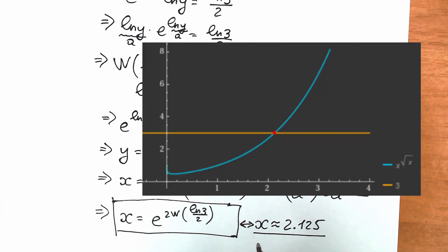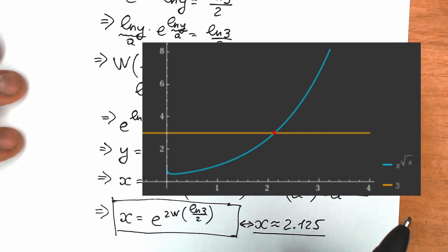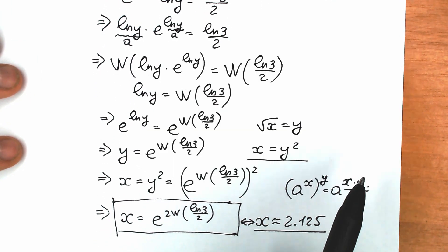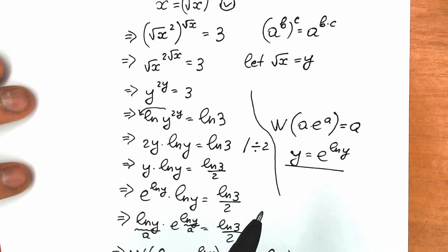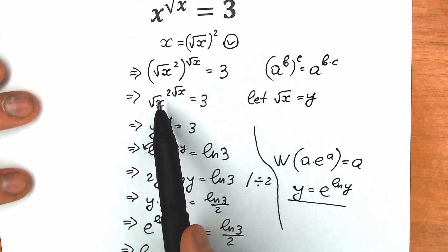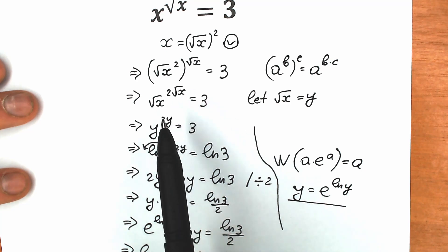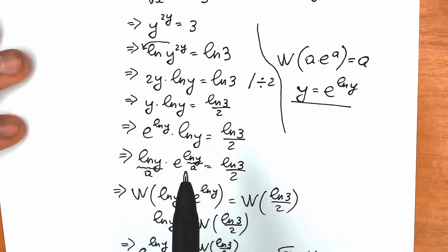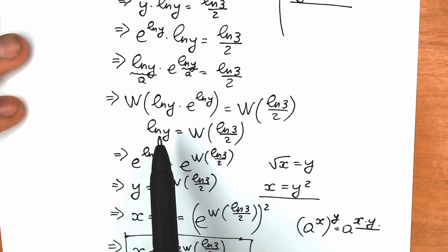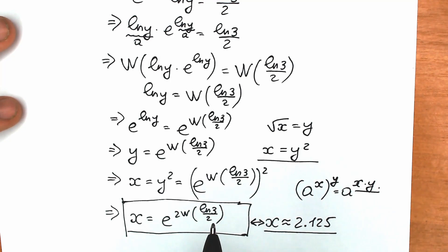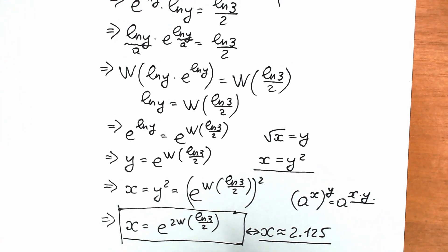Right now we can also see a graph for this question. As you can see, we have a real root, which is really great — we have this point of intersection. This is a great question to practice the Lambert W function and school power rules. We used substitution, the power rule, natural log, and the Lambert W function — a lot of really interesting tricks and steps.